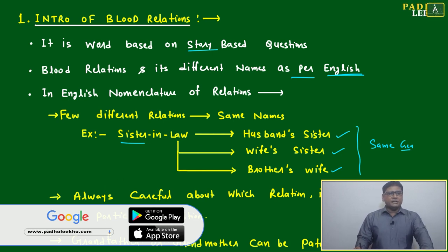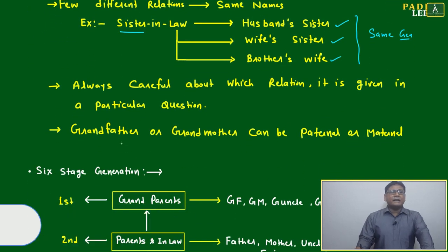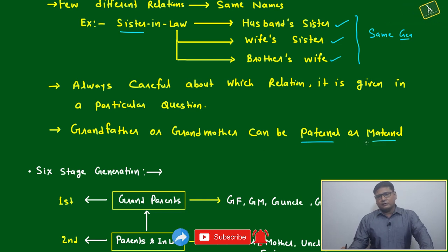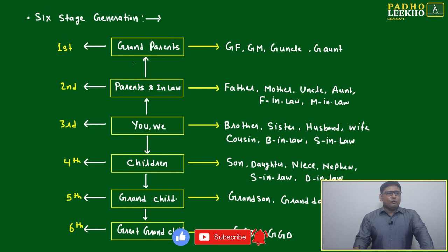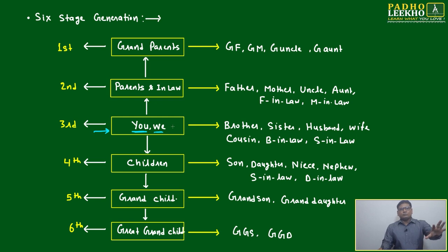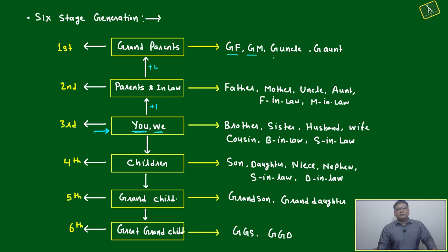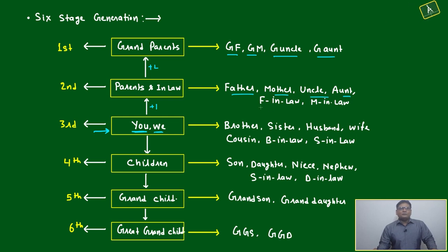Be careful with English relation names like grandfather or grandmother — they can be paternal or maternal. We generally follow six stages of relationship. Two generations above you are your grandparents, with names like grandfather, grandmother, grand uncle, or grand aunt. One generation above are your parents and in-laws: father, mother, uncle, aunt, father-in-law, mother-in-law.